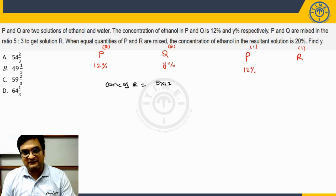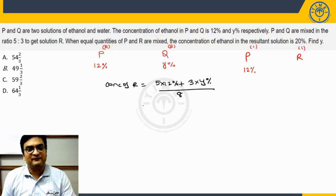5 into 12%, you are taking 3 parts of this, this divided by overall quantity which is 5 plus 3, 8. And when you simplify this is going to be 60% plus 3y percent by 8 overall percentage.